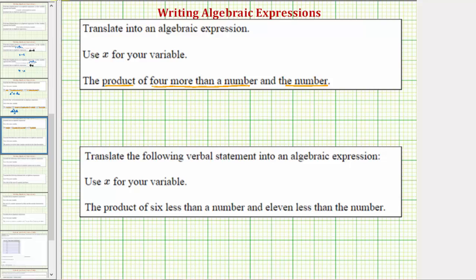So using the variable x, four more than a number would be x plus four, which is the first factor. So we have the quantity x plus four times the second factor, which is the number, which should be the variable x. So here we have the product, because we're multiplying, of four more than a number and the number. And we do need these parentheses, because it shows the first factor is x plus four.